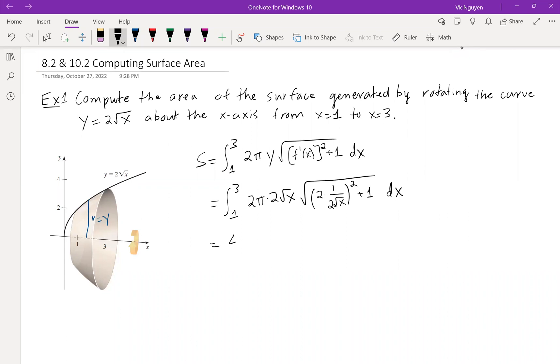We can pull out the 4 pi, integral from 1 to 3 root x, and this one is root of 1 over x plus 1 dx. Multiply the two root together, then we have 4 pi integral from 1 to 3 root of 1 plus x dx.